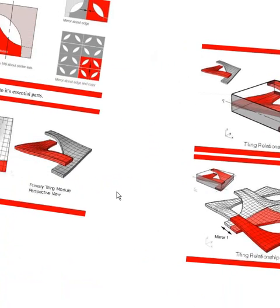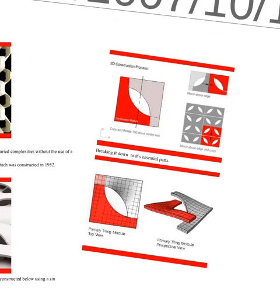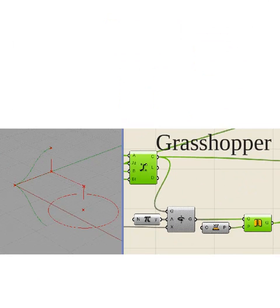Basically it comes down to this red surface here, which is then mirrored, copied, and rotated. With that, I had everything I needed to start in Grasshopper.